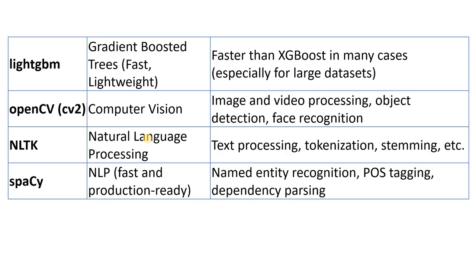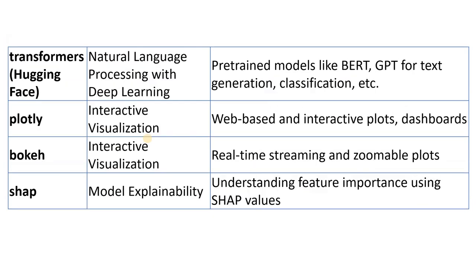Other libraries in the NLP field are spaCy and Transformers. If you are using pre-trained models like BERT or GPT for text generation, classification, and so on, in this world of generative AI, the Transformers library is especially helpful for NLP operations combined with deep learning.